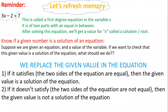So we have an equation and a value for x. To know if it's a solution, I replace it in the equation. After replacing and calculating, if I get two equal sides, it satisfies — the given value is a solution. If I didn't get two equal sides, the given value is not a solution.